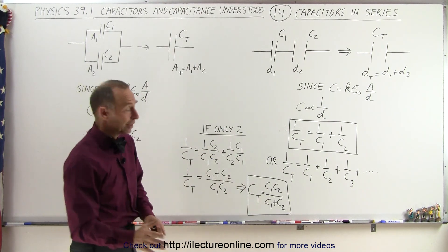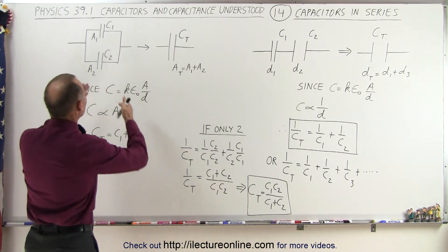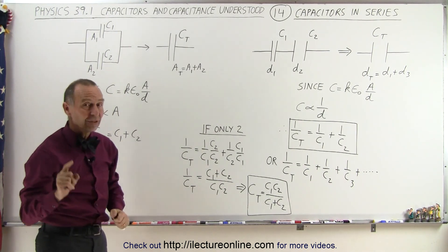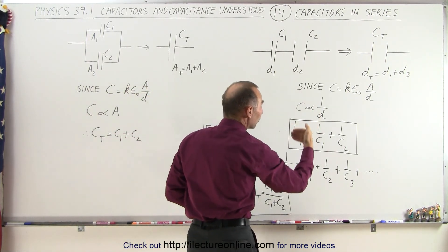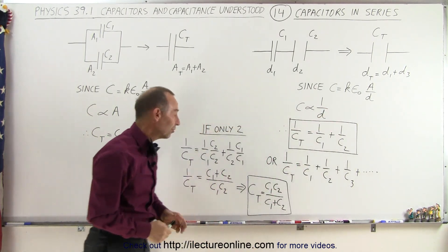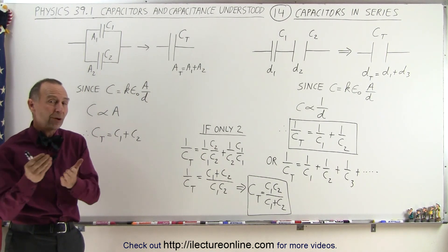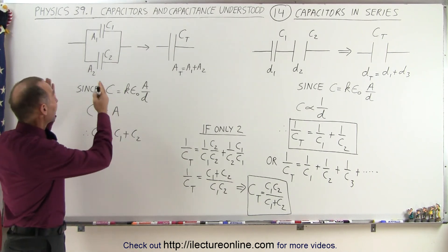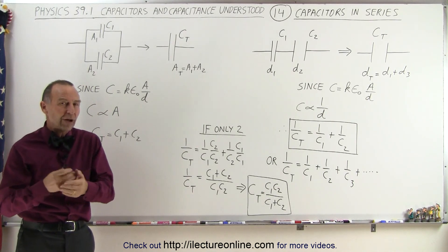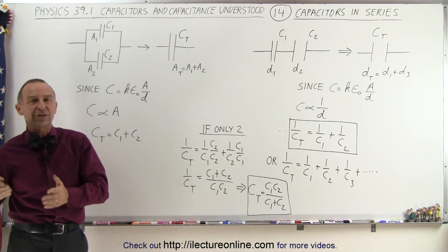If there are more than two, you have to use the inverse sum equation. So now you can see that when capacitors are in parallel, we simply add the capacitors together to get the total or equivalent capacitance. But if they're in series, we add the inverse of the capacitances: 1 over C total equals 1 over C1 plus 1 over C2, or we can use the product-over-sum equation. Later, we'll show videos on how to find the total capacitance when there's a combination of parallel and series connections.